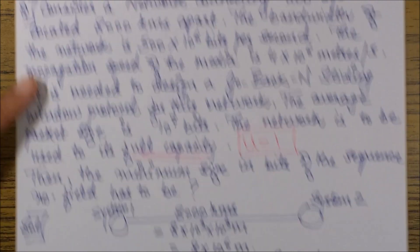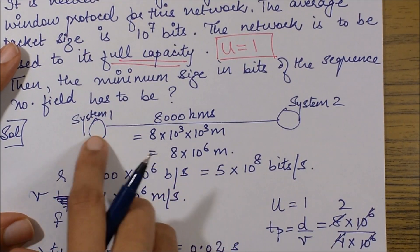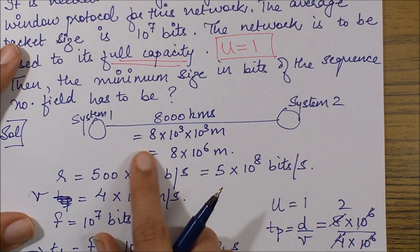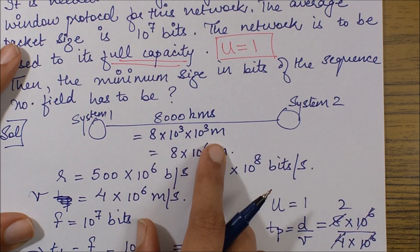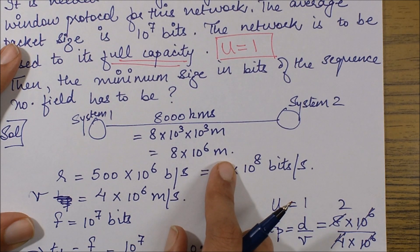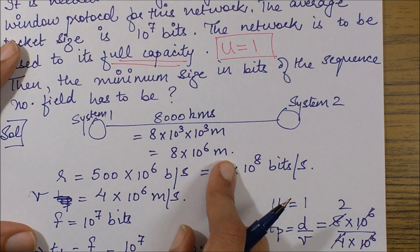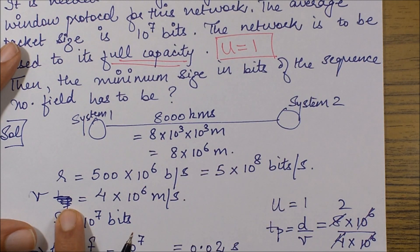Let's start with it. First of all, it said that the network has two systems which are 8000 kilometers apart. So let's draw it like that—this is system 1, this is system 2. They are 8000 kilometers apart, which means 8000 × 10^3, which simplifies to 8 × 10^6 meters. I'm just converting the entire thing into SI units.